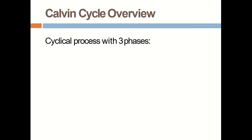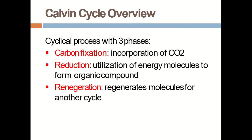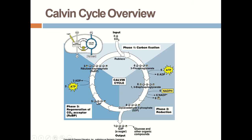The Calvin cycle possesses three phases: carbon fixation, reduction, and regeneration. Carbon fixation involves the incorporation of CO2. Reduction utilizes the energy molecules to form the first compounds of CO2. Regeneration regenerates the molecule for another cycle. This slide shows the overview of the Calvin cycle: it utilizes the rubisco enzyme with 3 CO2, 6 ATP and 6 NADPH in phase 1; phase 2 produces a sugar and other organic compounds; and phase 3 is the regeneration of RuBP in the presence of 3 more ATP molecules.